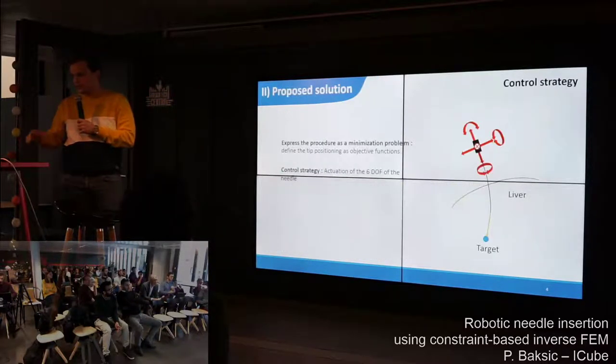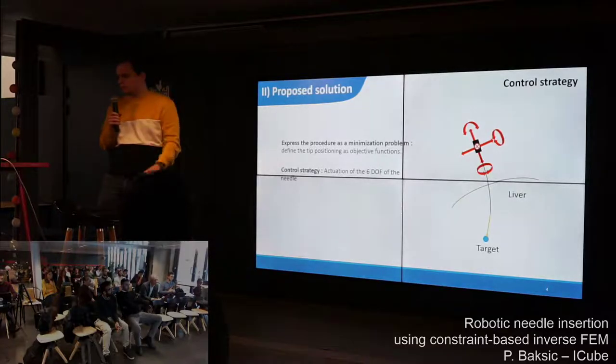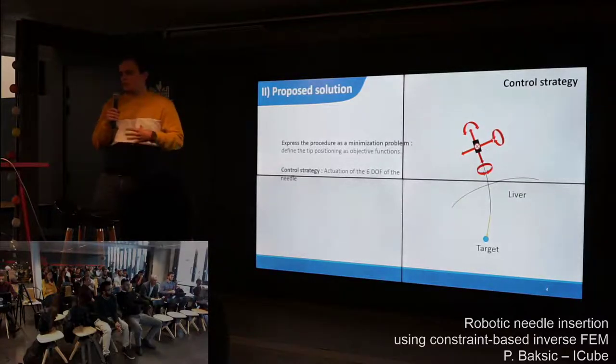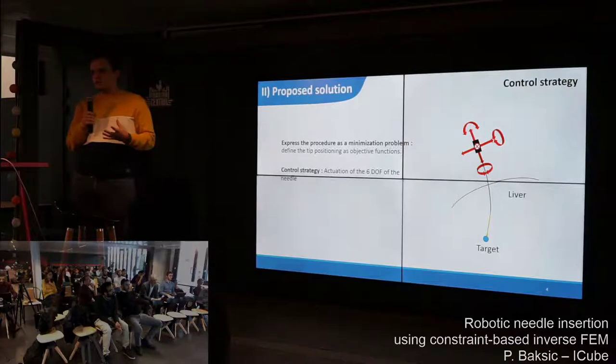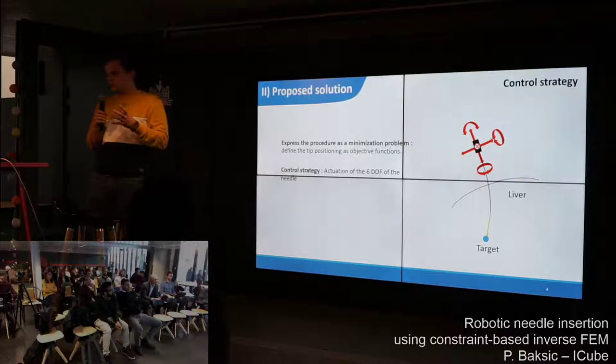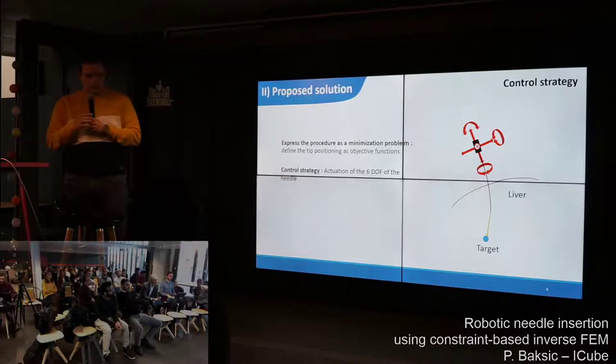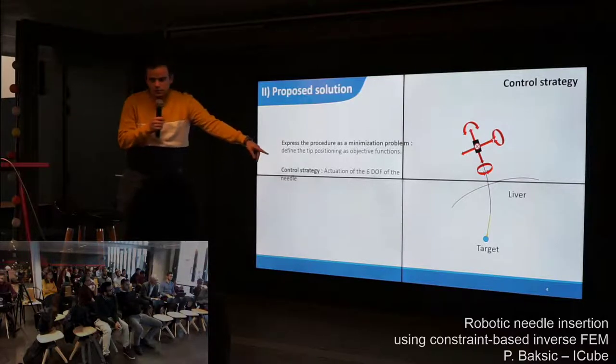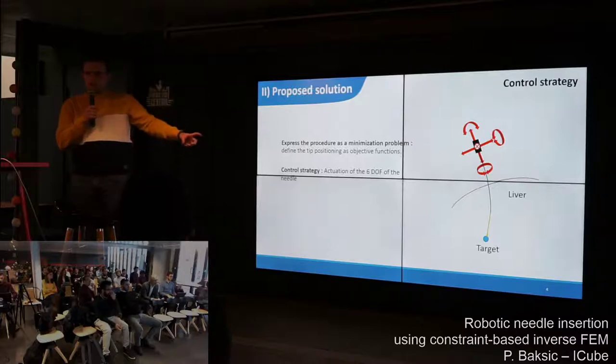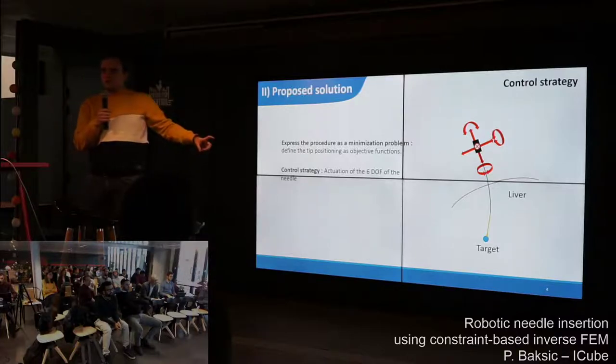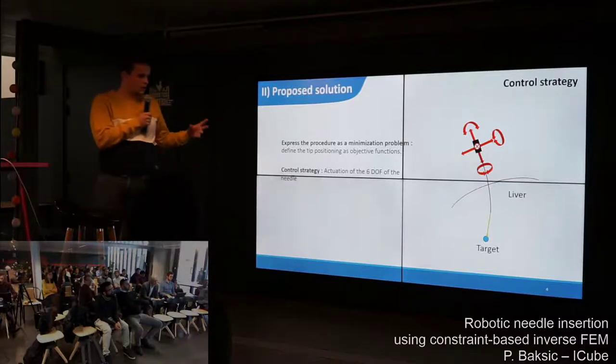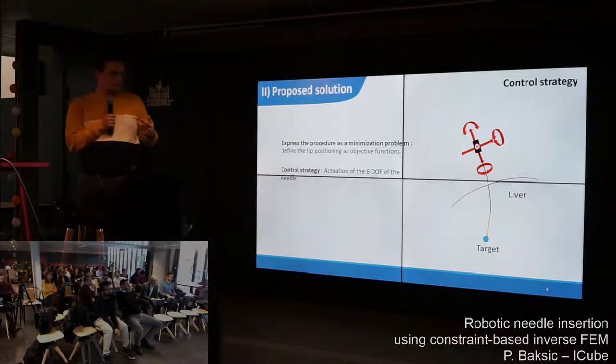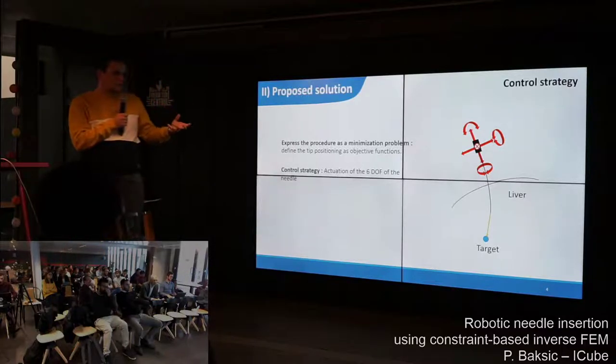Let's talk about control strategy. What we propose is to express the procedure as a minimization problem. As you can see here in yellow, this is an objective function that we defined at the beginning of the procedure and that we want to minimize.